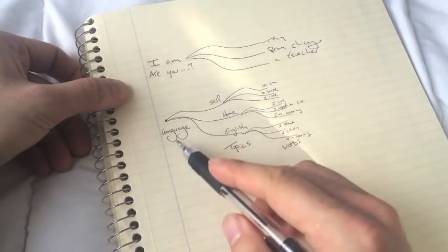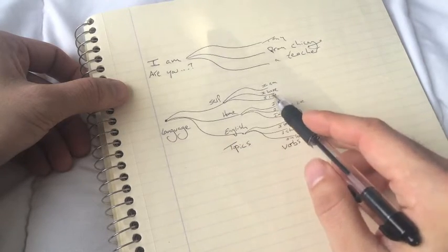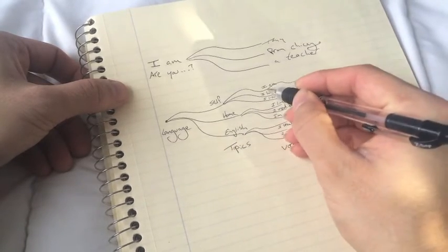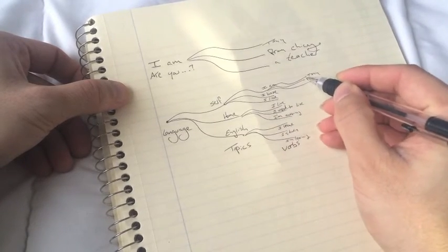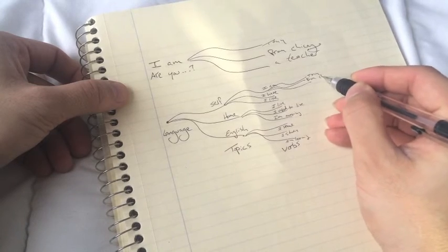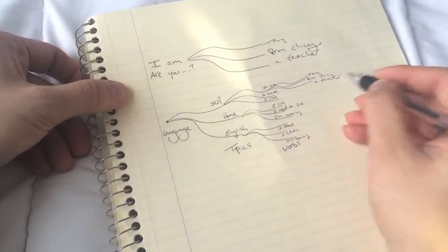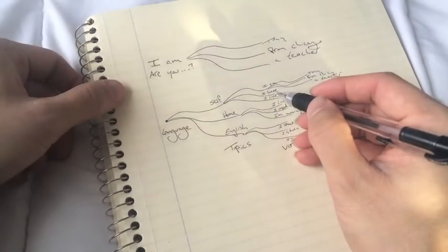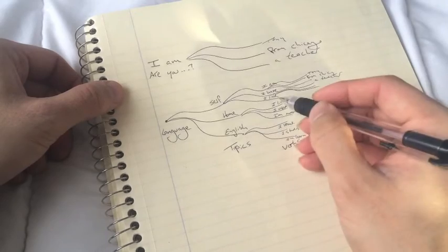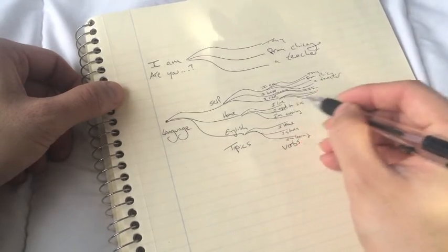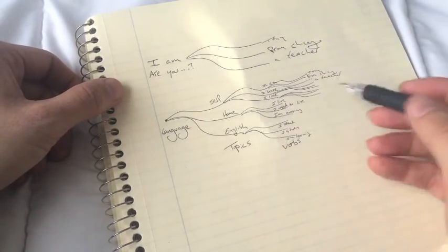So language, topic self: I am, I have, I like. I am Tony, I am from Chicago, I am a teacher. I have kids, I have brothers and sisters. I like coffee, I like tea. I live here, I used to live... And that's when verb flows into vocabulary.